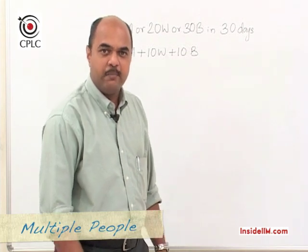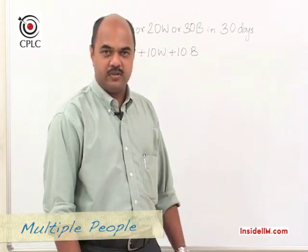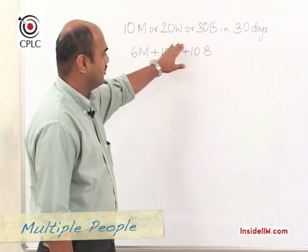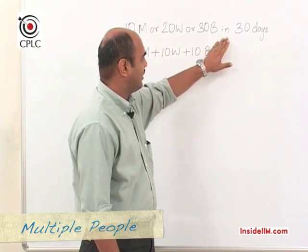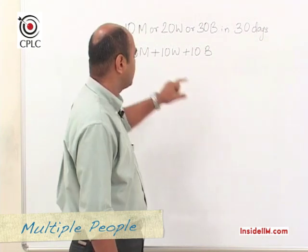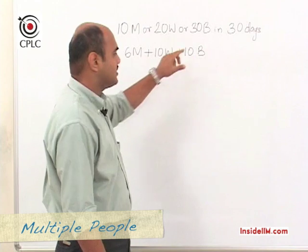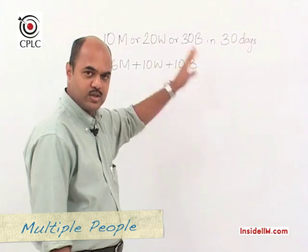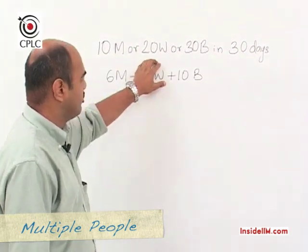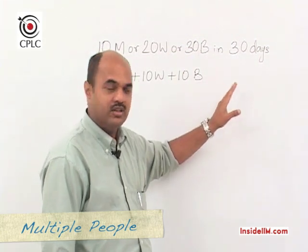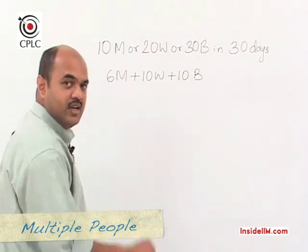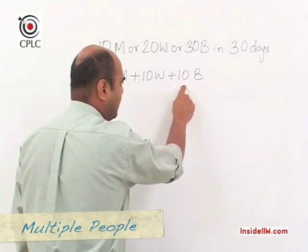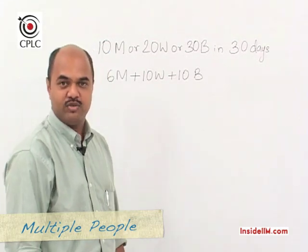Let's look at a question involving multiple people. We have 10 men or 20 women or 30 boys who can complete a piece of work in 30 days. Note that 'or' tells us that 10 men is equivalent to 20 women which is equivalent to 30 boys. The question is: in how many days will 6 men and 10 women and 10 boys complete the same piece of work?